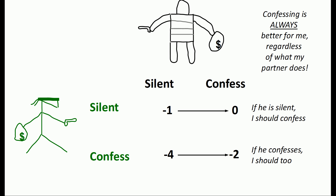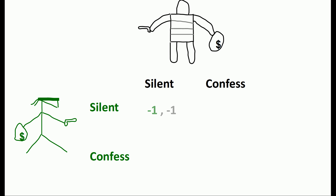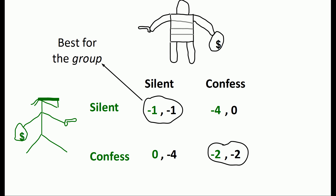So far, we've been thinking about the game from one person's perspective at a time. But truly, we should be thinking about it together as a whole, when both people are making the decision. They each have the choice to stay silent or confess, and that affects the outcome for each person in the group. It seems best for the group if they could both stay silent — they'll only serve one year in jail. But it's better for you to confess no matter what your partner does, and it's better for your partner to confess no matter what you do. Therefore, both of you will end up confessing and serving two years.